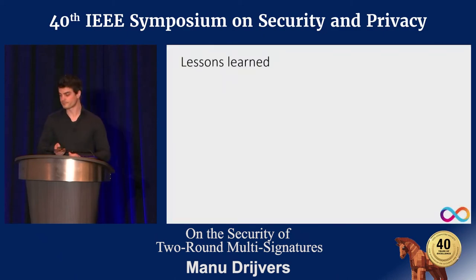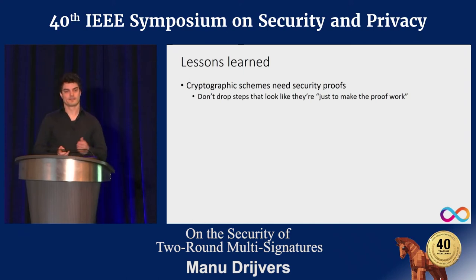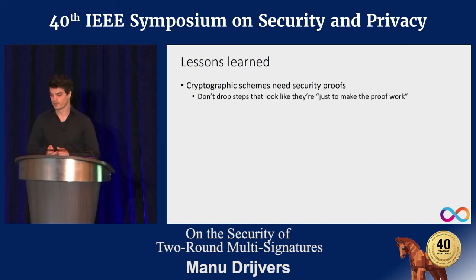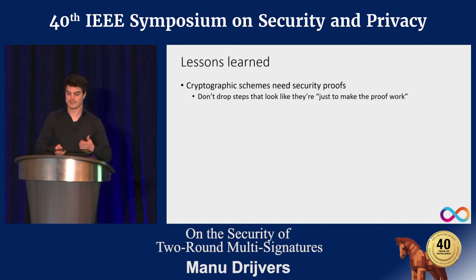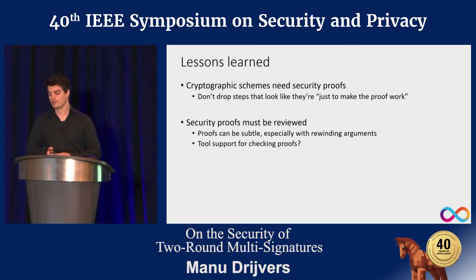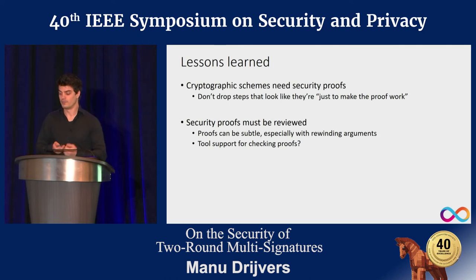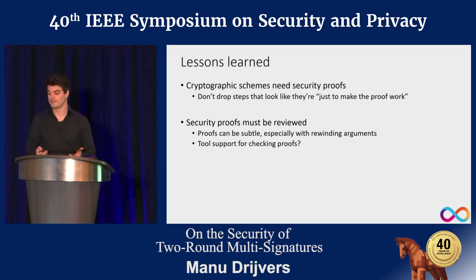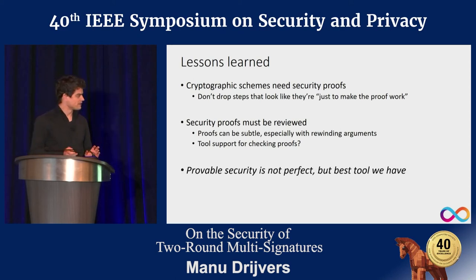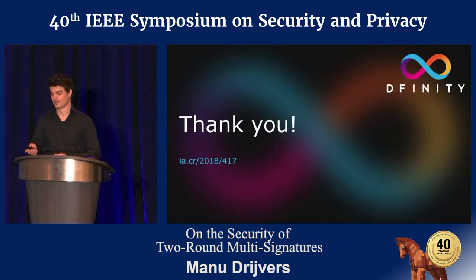The bigger lesson is that security proofs are extremely important, and we shouldn't place too much trust in cryptographic schemes that haven't been proven secure. We also shouldn't drop steps from a scheme that seem to exist only to make the proof work — that's exactly what can get you in trouble. But some of these schemes did have seemingly convincing proofs with very subtle flaws. In the future, we really need tool support for checking such proofs. Proof security is not perfect, but it's still the best tool we have for designing provably secure cryptographic schemes.